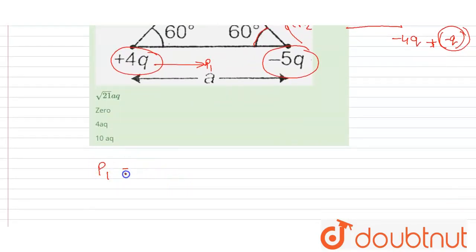For the p1, dipole moment p1 will be equal to distance into q and here it will be 4q into a. A is the distance, it is given.